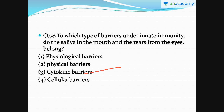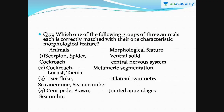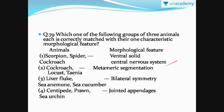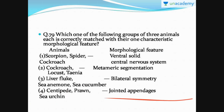Question number 79: which group of three animals is correctly matched with their characteristic morphological feature? The correct option is option number one — scorpion, spider, and cockroach, which belong to Arthropoda, have a ventral solid central nervous system. Cockroach, Locusta, and Tinea having metameric segmentation is wrong — Locusta does not have metameric segmentation. Liver fluke, sea anemone, and sea cucumber having bilateral symmetry is also wrong, as is centipede, prawn, and sea urchin having jointed appendages — sea urchin does not have jointed appendages.